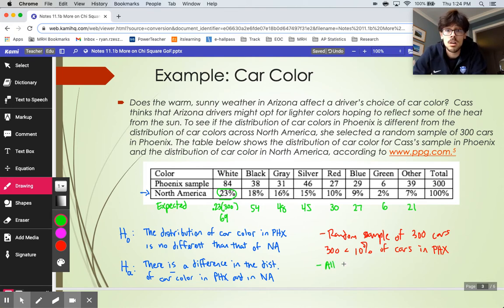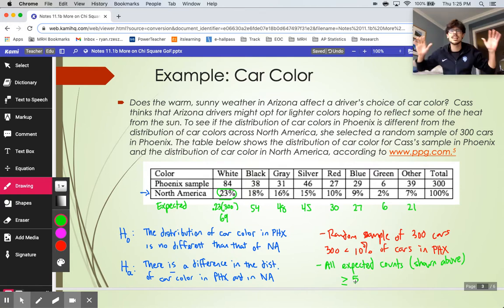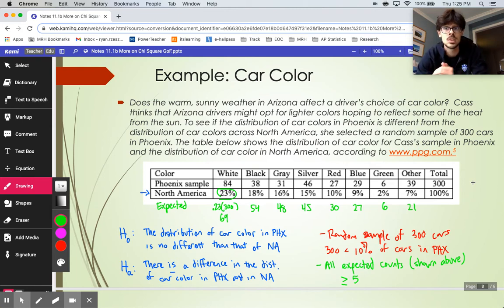So there are all of my expected counts. And then I would say for my condition here, all expected counts which are shown above are greater than or equal to 5. I don't have to rewrite the numbers and say 69 is greater than or equal to 5, as long as they're somewhere in the problem. But those expected counts need to be shown. Comment on this - green barely passed the counts. But notice they also have an other category at the end. So things like purple cars, orange cars probably don't pass the 5 condition by themselves, so they got lumped together.